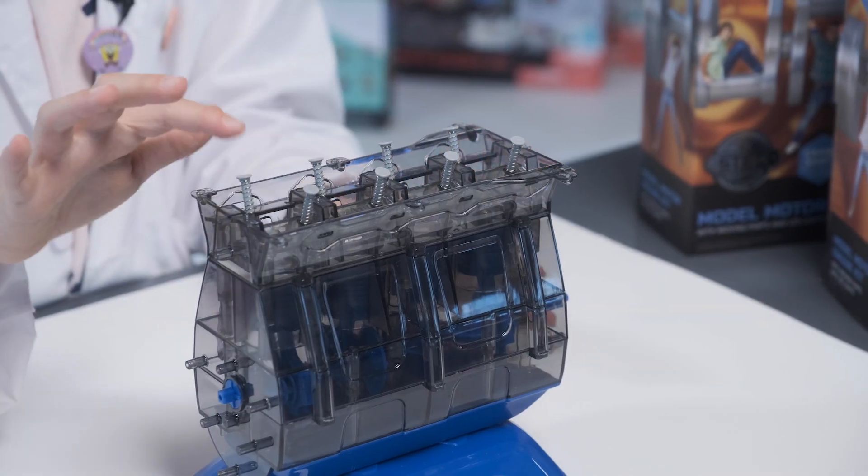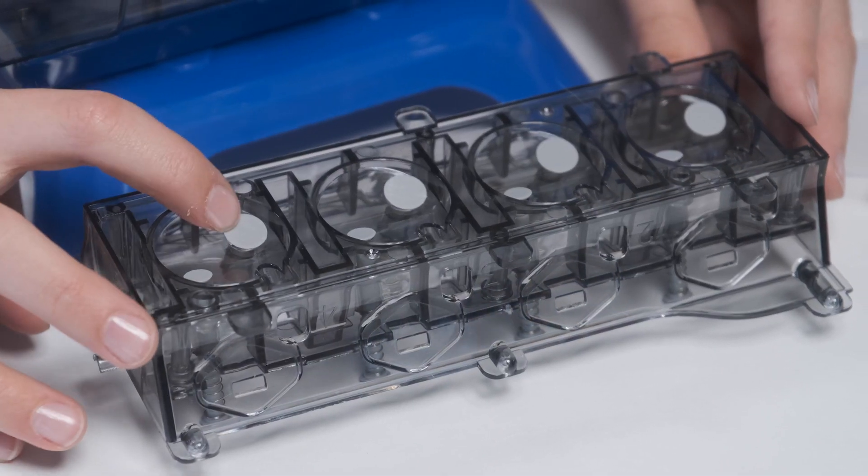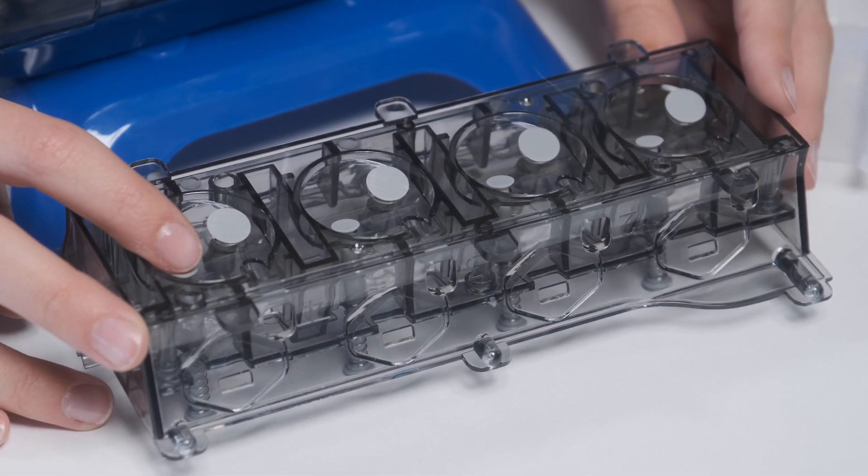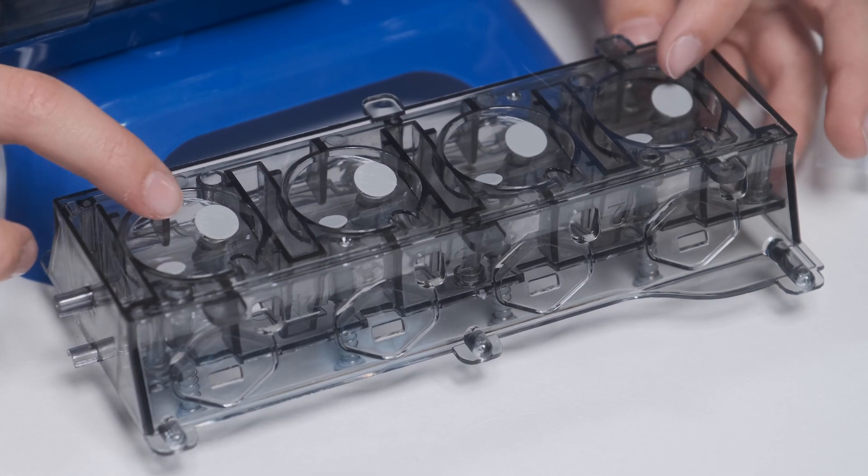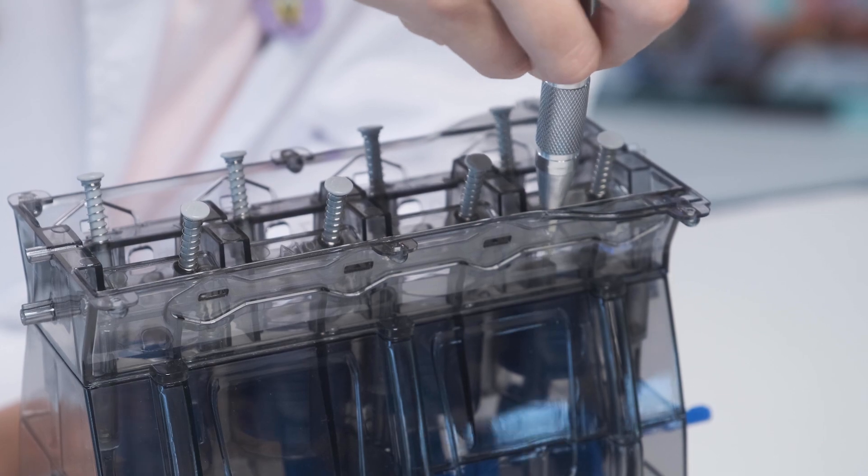Next up are the valve stems. Install the stems through the cylinder head covers and into the lower cylinder head. Don't forget to add the intake and exhaust valves. These guys let air in and out to ignite the fuel for the pistons. Flip it back over and screw it into the crankcase.